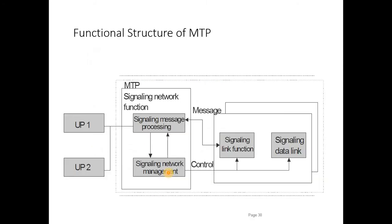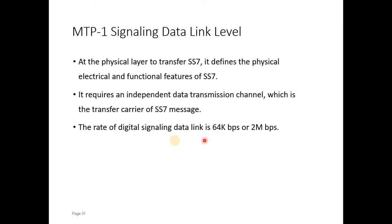Let's have a deeper look into the message transfer part. It comprises three levels: MTP1, MTP2, and MTP3. MTP3 is the signaling network function layer, MTP2 deals with signaling link functions, and MTP1 relates to the physical processing of messages. The user parts interact with the signaling message processing so their messages can travel over the signaling network. MTP1, as the physical layer, defines the physical, electrical, and functional features of SS7 and can be either 64 kbps or 2 Mbps in the case of TDM.